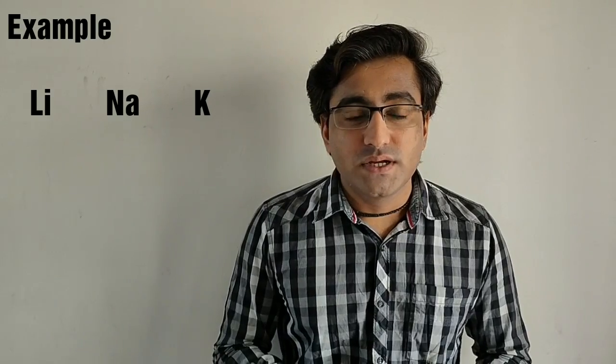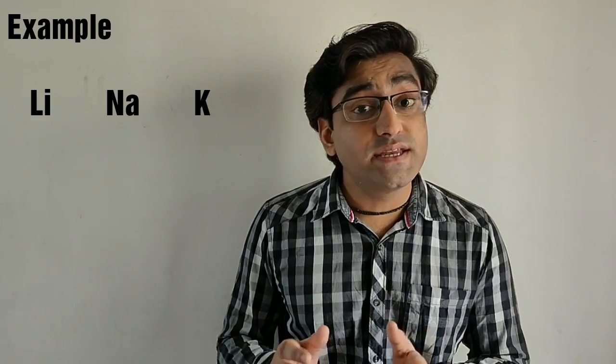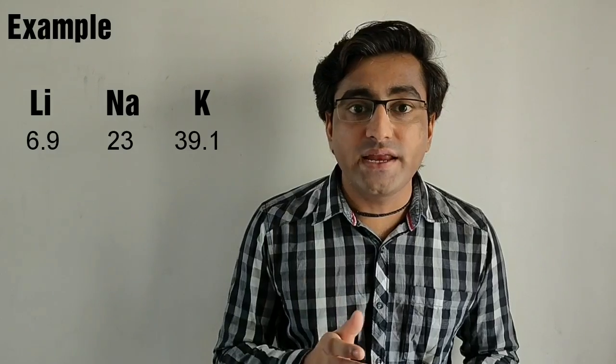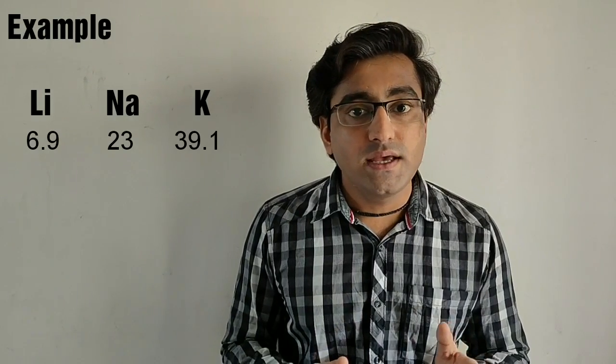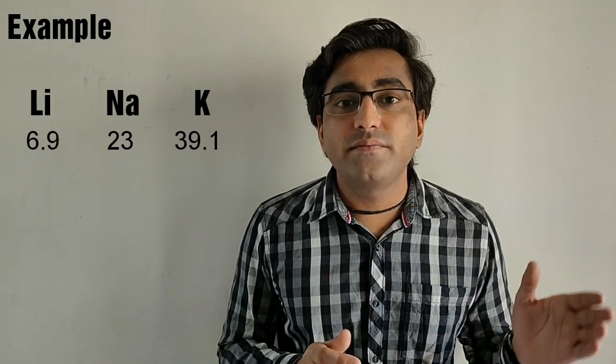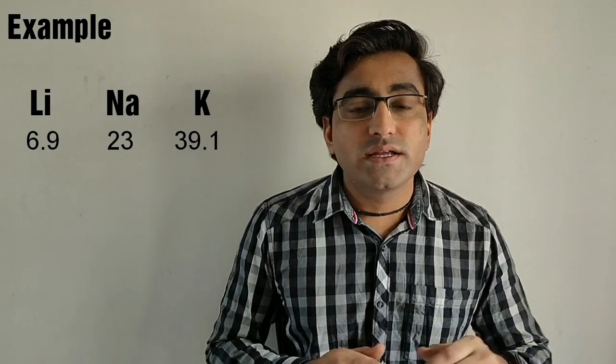Now let us take an example of a triad. In this triad there are three elements: lithium, sodium, and potassium. The atomic masses of all three of these elements are 6.9, 23, and 39.1 respectively.